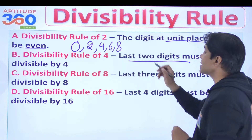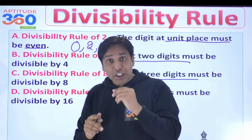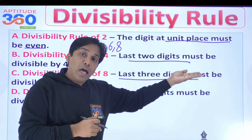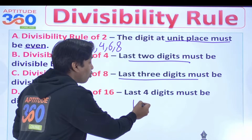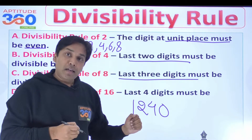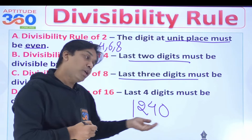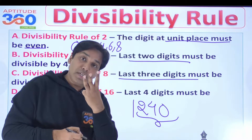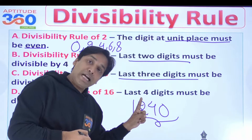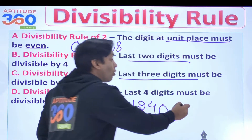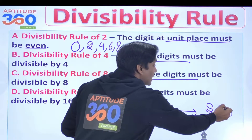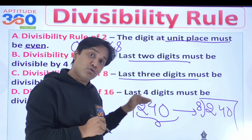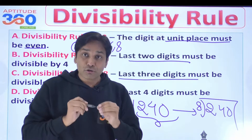For the rule of 8, the last 3 digits must be divisible by 8. What if I have the number 1,2,4,0? I focus on the last 3 digits — the digit at unit place, tens place, and hundreds place. So I check whether 240 is a multiple of 8. Yes it is, and hence 1,2,4,0 is also going to be a multiple of 8.